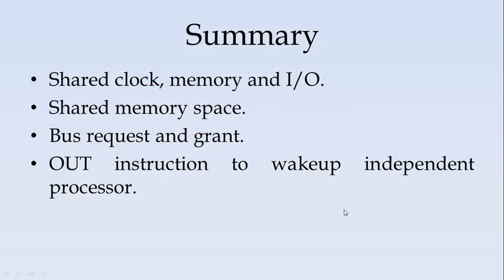To summarize the closely coupled configuration: an independent processor is used which has its own instruction set. It uses a shared clock, memory, and IO, and uses shared memory space for exchanging messages. Bus request and grant signals are used for bus arbitration, and the OUT instruction is used to wake up the independent processor. Thank you.